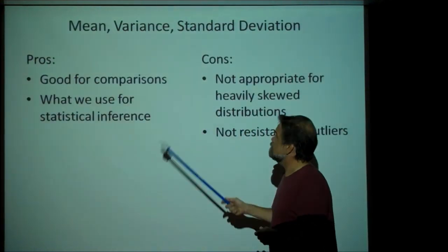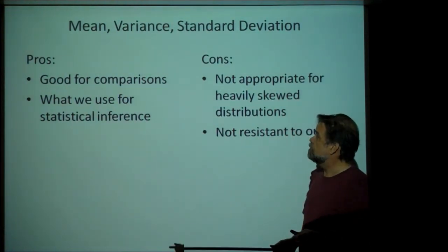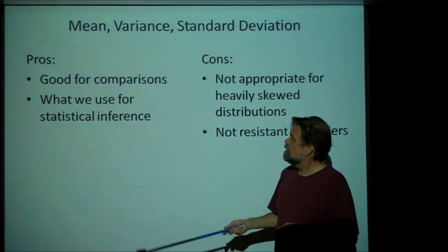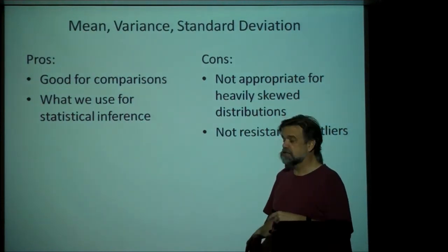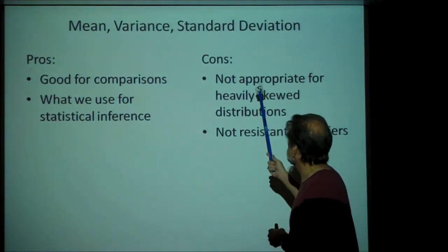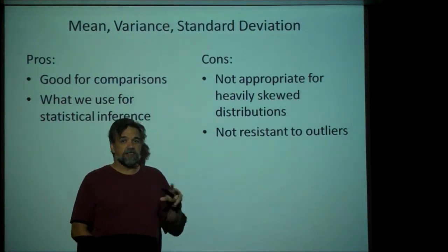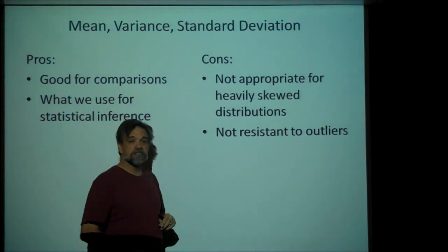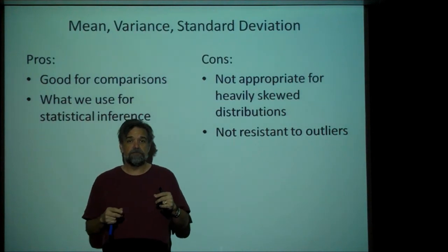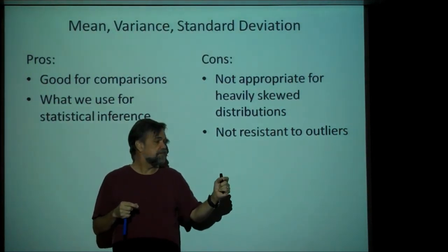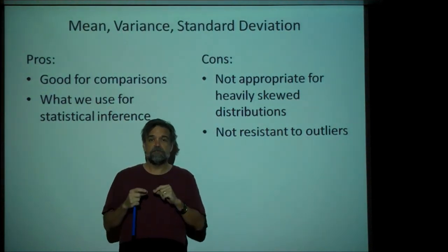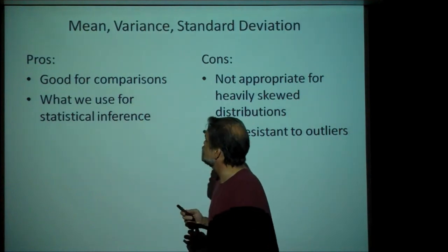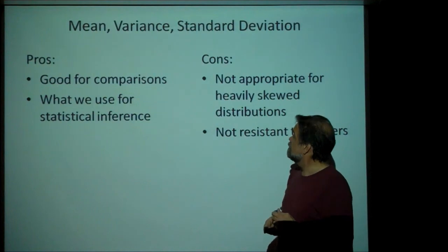So when should we use the mean, variance, and standard deviation? There are pros and cons. They're good for comparisons, just like the median and IQR are, and they're what we use for statistical inference because the associated math is easy to manipulate. Some cons: the mean and standard deviation are not good measurements for heavily skewed distributions — when your distribution is skewed, you should use the median and IQR. Also, they're not resistant to outliers. If you have an outlier way to the right of the rest of your data and wiggle it around, it doesn't affect the median and IQR, but it does affect the mean, variance, and standard deviation. That's it for this video — thanks for watching.